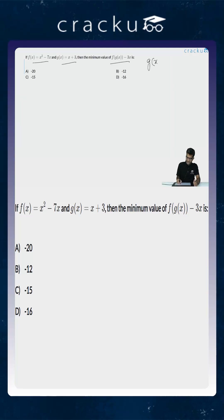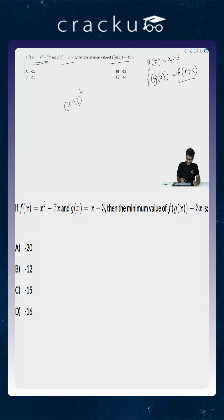g of x is equal to x plus 3, so the value of f of g of x will be equal to f of x plus 3. But f of x is x squared minus 7x, so f of x plus 3 will be x plus 3 whole squared minus 7 times x plus 3. This is the value of f of g of x.